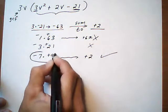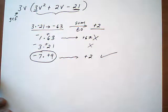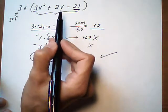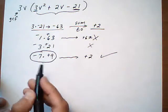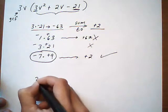So we're going to take these two factors, and we're going to split the middle term of the trinomial, the 2V, into 9V minus 7V. So that's the next step.